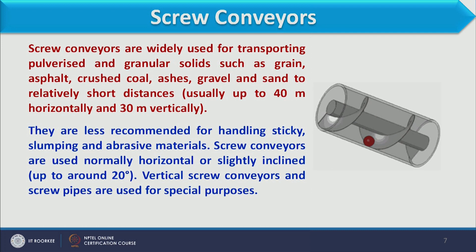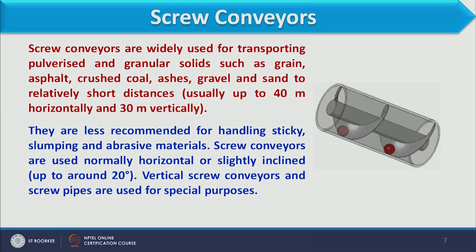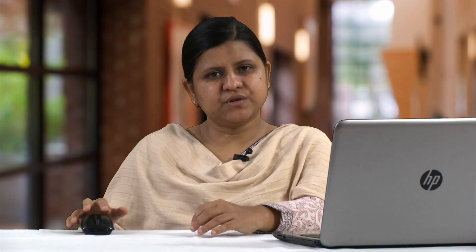Screw conveyors normally transport material in the horizontal plane; however, slight inclination is also possible — that is, up to 20 degrees. Usually inclination up to 20 degrees is used, and screw conveyors are used for shorter distances in the plant, but for transporting granular material they are used extensively.